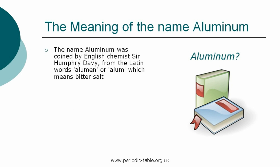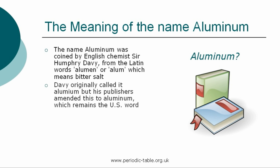The name aluminum was coined by English chemist Sir Humphrey Davy, from the Latin words alumun or alum, which literally means bitter salt. Davy originally called it alumium in 1812, but his publishers amended this to aluminum, which remains the US word.